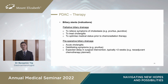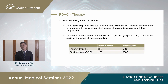What about indications for biliary stents? There are two main categories: palliative drainage and pre-operative drainage. Regarding the big question of plastic versus metal stents: compared with plastic stents, metal stents have a lower risk of recurrent obstruction, but are not superior in terms of technical success, therapeutic success, mortality, or complications. Many experts advise choosing stents based on expected length of survival, quality of life, costs, and physician expertise. Plastic stents have a shorter median patency compared to metal stents, but cost more than ten times less.